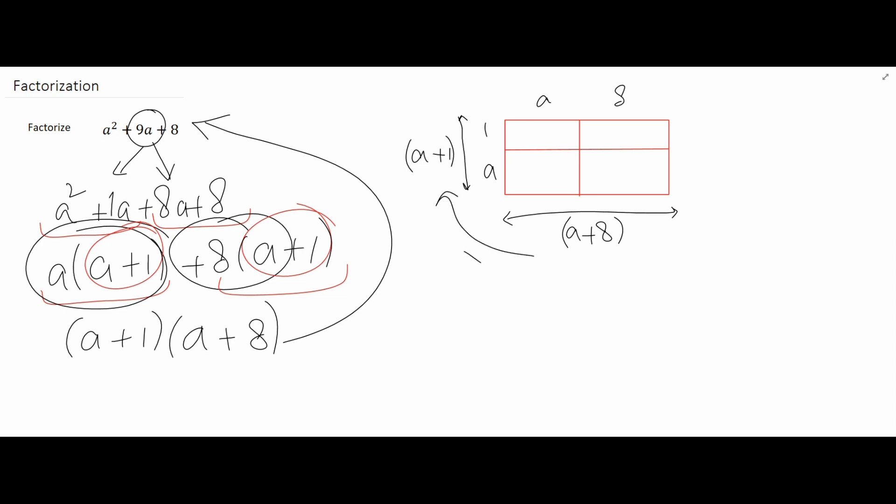So if I want to multiply the two brackets a plus 1 and a plus 8, I could split the whole rectangle into four different rectangles. So for the first rectangle whose height is 1 and base is a, the area is going to be a.